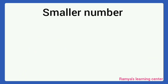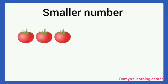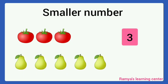Next, smaller number. How many tomatoes are here? 1, 2, 3. Then, how many pears are here? 1, 2, 3, 4, 5. Which is less? Tomatoes are less. So, number 3 is the smaller number.